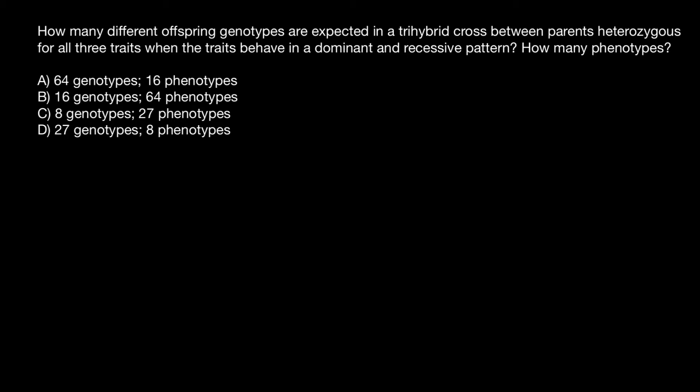Let me start with a simple example. Many of you know how to build a Punnett square. For example, when we have only one gene, in a diploid organism that gene can be represented by two alleles, dominant and recessive, and the Punnett square is going to be simple — two by two.